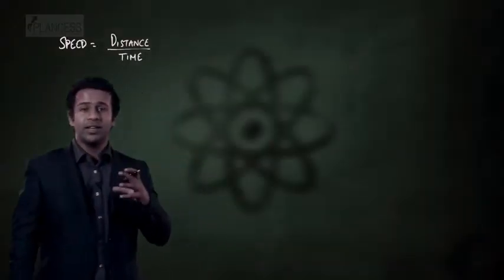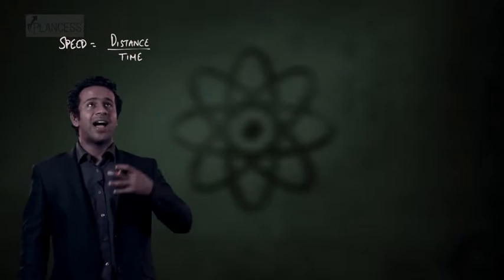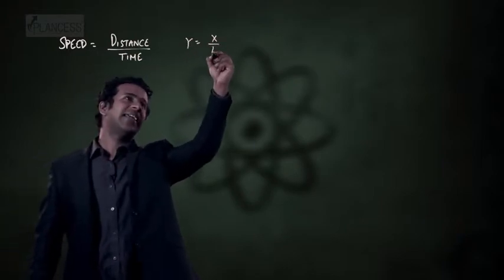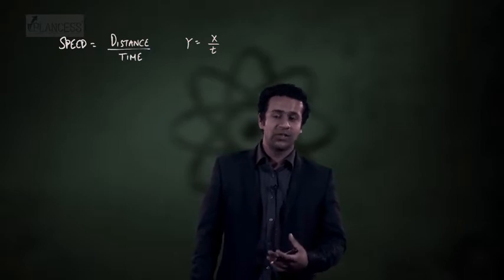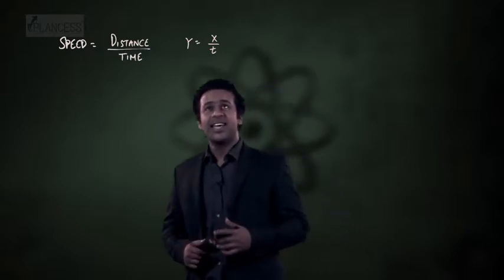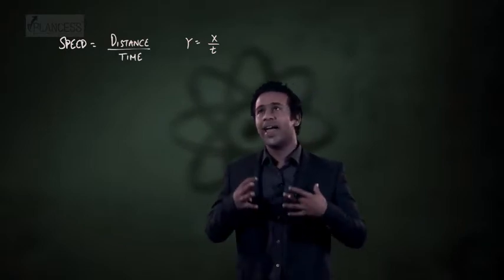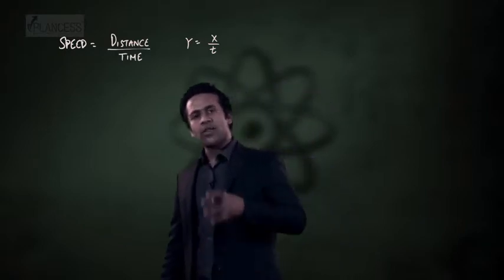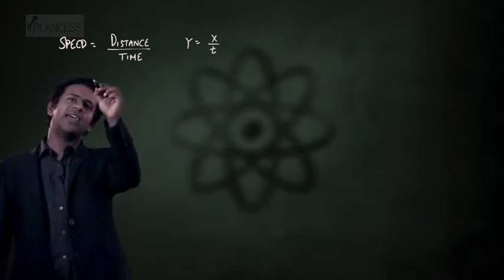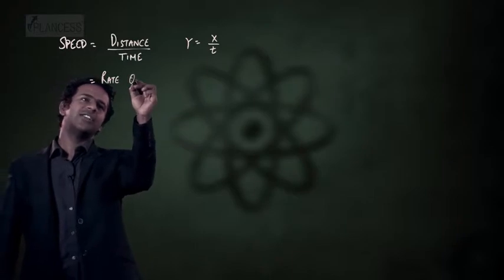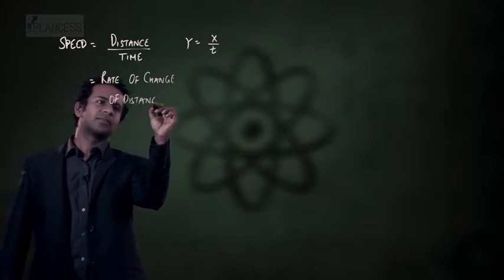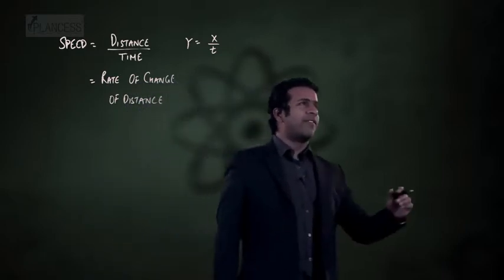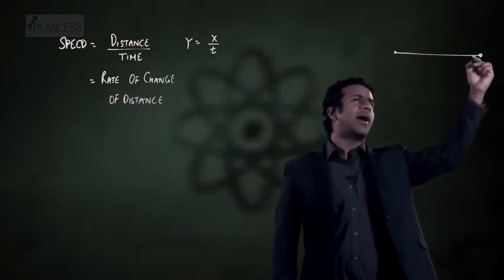For that reason we've defined speed as distance divided by time. Now whenever you see a quantity defined as y equals x divided by t, then we can say that y is the rate of change of x with respect to time, which means y is a measure of how x changes every second. On the same lines, speed can be said to be the rate of change of distance.